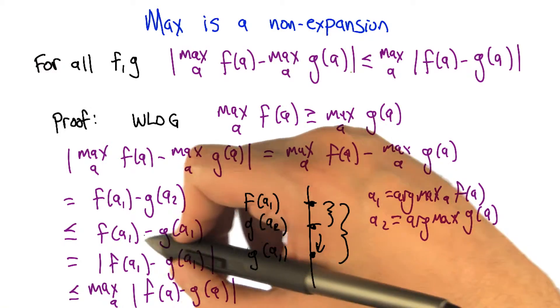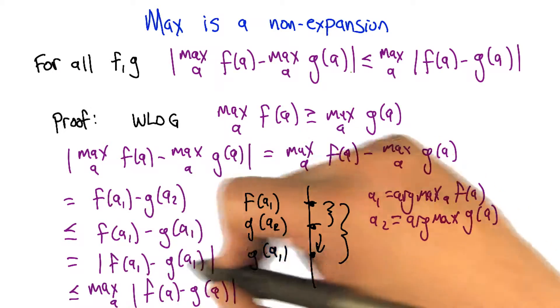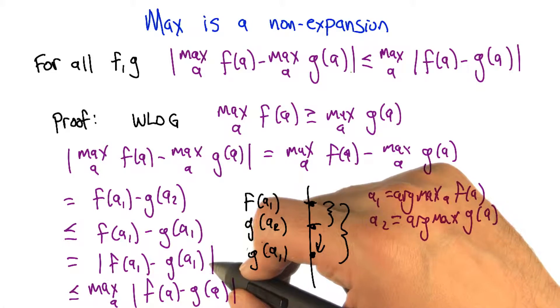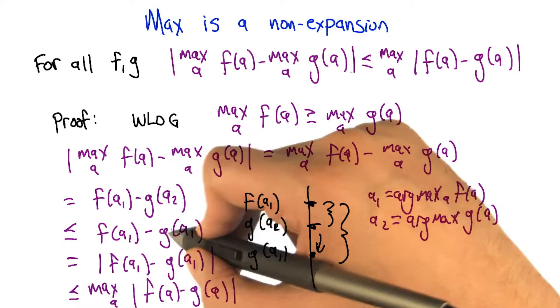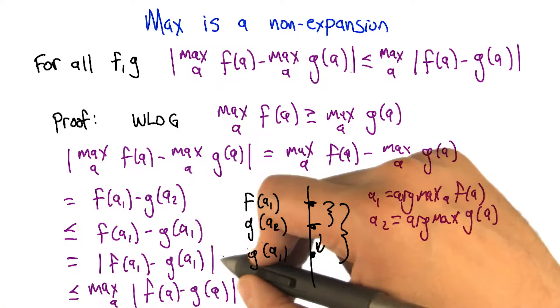Now we're almost home free. So the first thing I want to point out is that we can reintroduce these absolute value signs without killing anything. Because we can. This is a positive quantity, and so taking the absolute value doesn't change it.